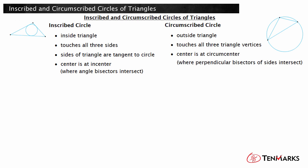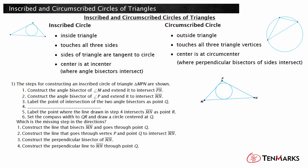Let's look at an example of a construction of an inscribed circle of a triangle that is missing a step. The steps for constructing an inscribed circle of triangle MPN are shown — which is the missing step in the directions? Looking at the steps that are already given, you can see that steps 1, 2, and 3 describe drawing the angle bisectors of two of the angles, and label the point of their intersection as Q. The point where the angle bisectors meet is the incenter, which is the center of the inscribed circle.